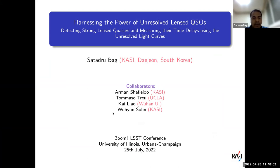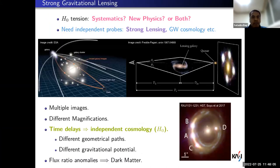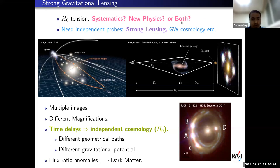These people are involved in this project. My previous speakers explained why strong gravitational lensing and time-delay cosmography are important in today's cosmology. Briefly, the emerging tensions in different datasets are coming up — maybe because of systematics, new physics, or both. We need independent probes like strong lensing time delays and gravitational wave cosmology.